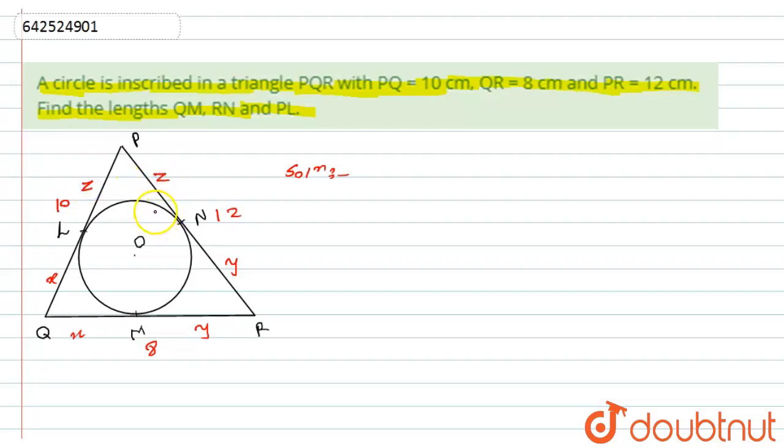Now, it is stated to find out QM means this length, then RN means this length and then PL means this length. So here, from the conclusion that tangent drawn from external point onto the circle are equal, from this point I can say that PL is equals to PN is equals to Z.